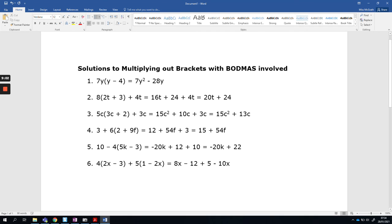Let's collect like terms. 8x minus 10x gives me minus 2x, and then I've got minus 12 plus 5, that's minus 7.